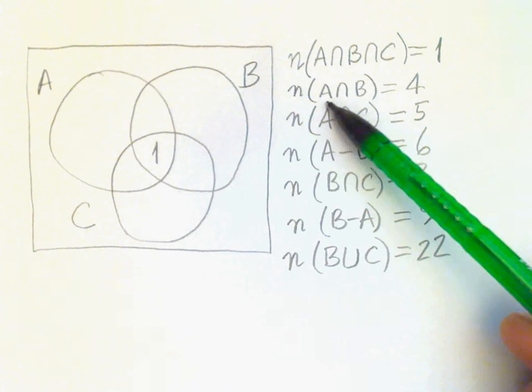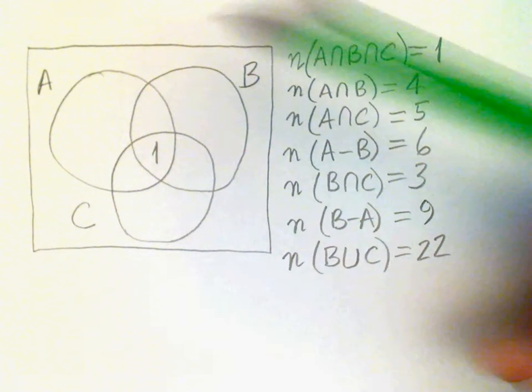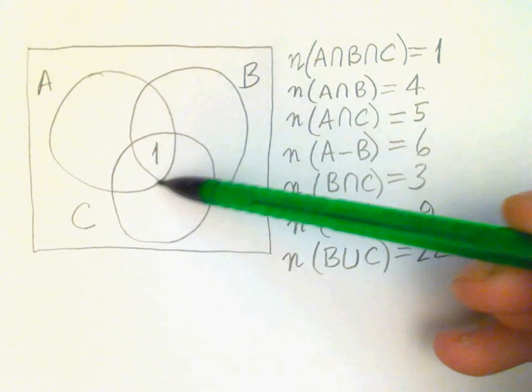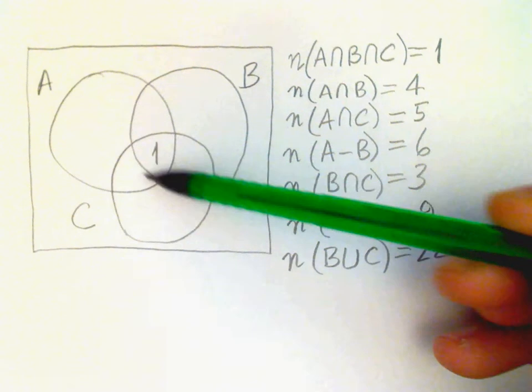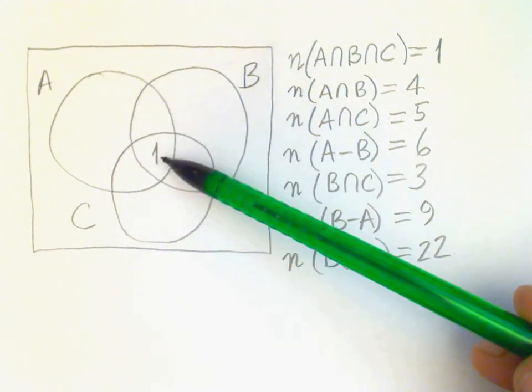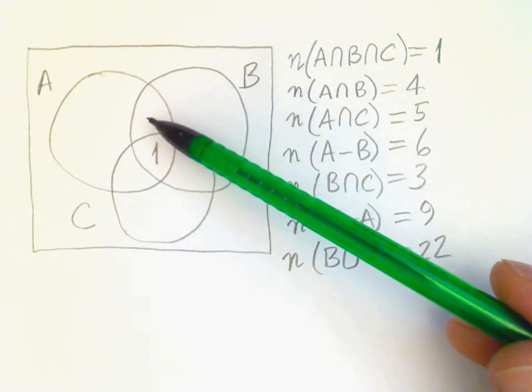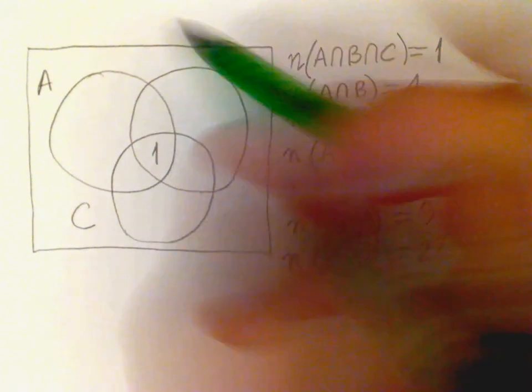The next bit of information says that A intersect B is 4. Where is A intersected with B? Well, it's here. There's where A intersects B. Now, this region here already has one element in it. And so that means that this region up here must have 4 minus 1 or 3 elements in it.